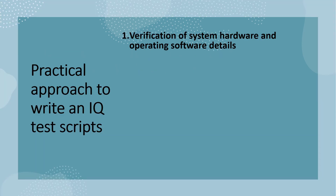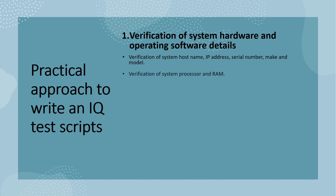Now in this slide, we will discuss the practical approach to write an installation qualification test script. The first test script is for the verification of system hardware and operating software details. In the IQ test script, the following details need to be mentioned for verification, but are not limited to: verification of system host name, system IP address, system serial number, system make and model. Next is verification of system processor and drive capacity.